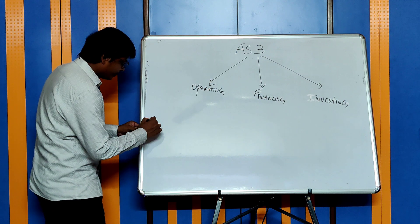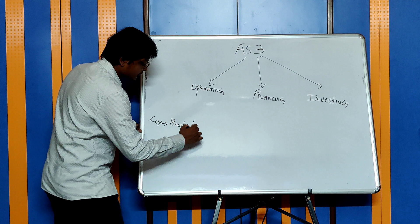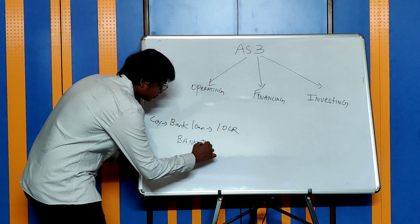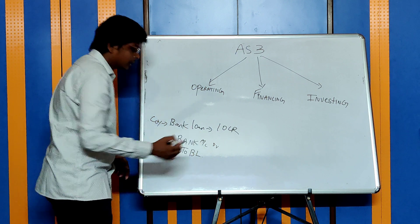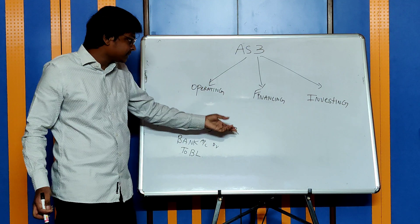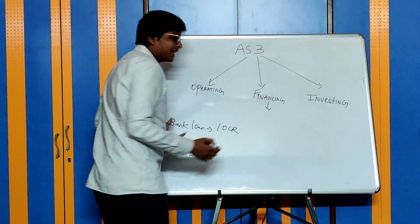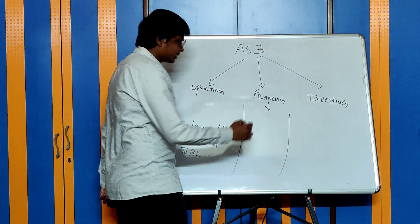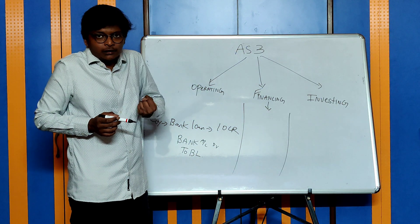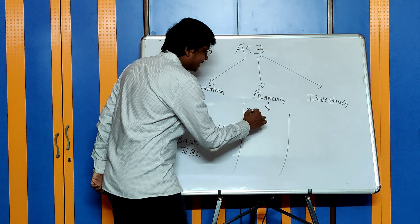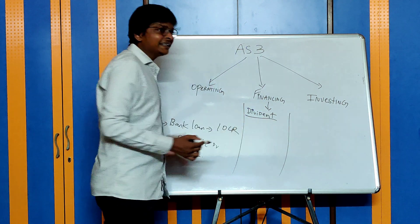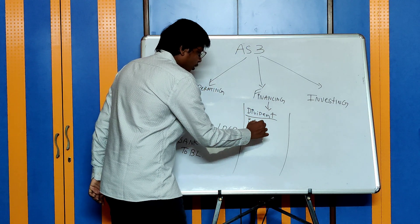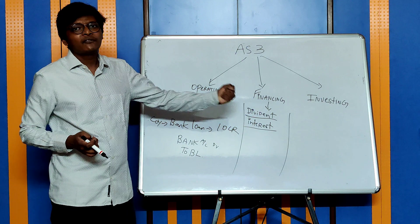Let's say a company has taken a bank loan of 10 crores. The entry is bank account debit to bank loan. This means the company has generated cash of 10 crores this year in the form of a financing activity. Any activity in the form of financing — cash generated or spent — falls under financing activities. Examples include getting a bank loan or repayment of a bank loan. Paying dividend out of share capital invested by shareholders is also a financing activity. Interest paid on a bank loan or on debentures also comes under financing activities.